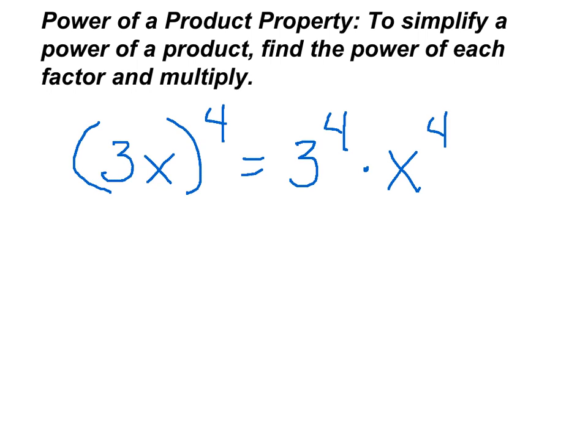We can go ahead and solve 3 to the 4th — we know that's 81. We can't solve x to the 4th because we don't have a value for x, so we simply leave it as x to the 4th.